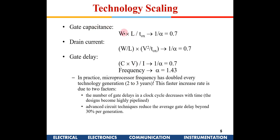What about gate capacitance? Total gate capacitance is given by W × L / tox. W and L both decrease by 1/α, and tox also decreases by 1/α. Two of those 1/α factors cancel, so the gate capacitance has only one factor of 1/α, meaning it is reduced by a factor of 0.7.